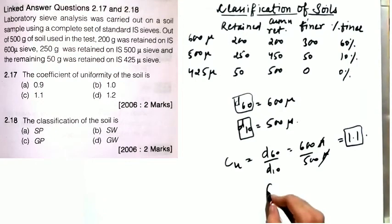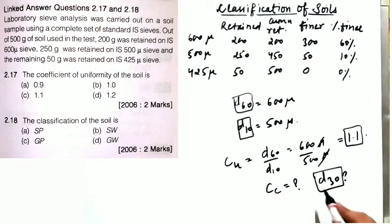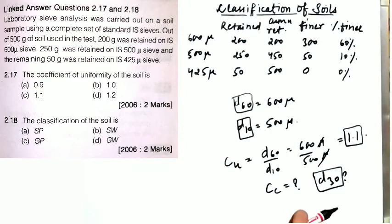Can we calculate Cc in this case? No — D30 is not given. It could be approximated by linear interpolation, but since grain size distribution curves are not linear, this would introduce error. Therefore, the exact value of Cc cannot be calculated in this question.